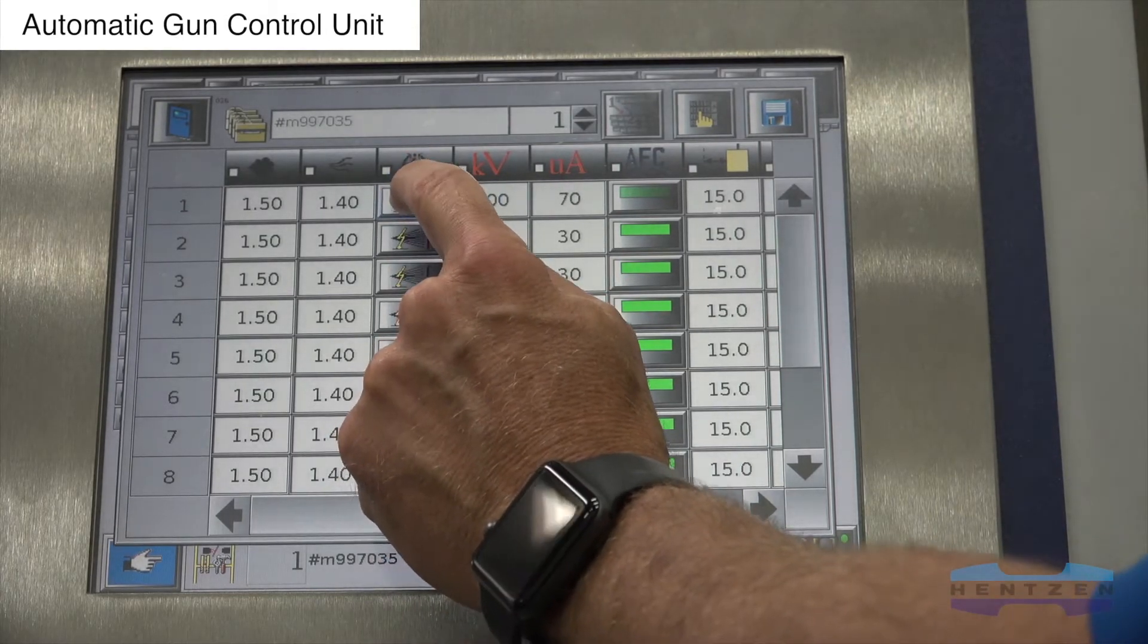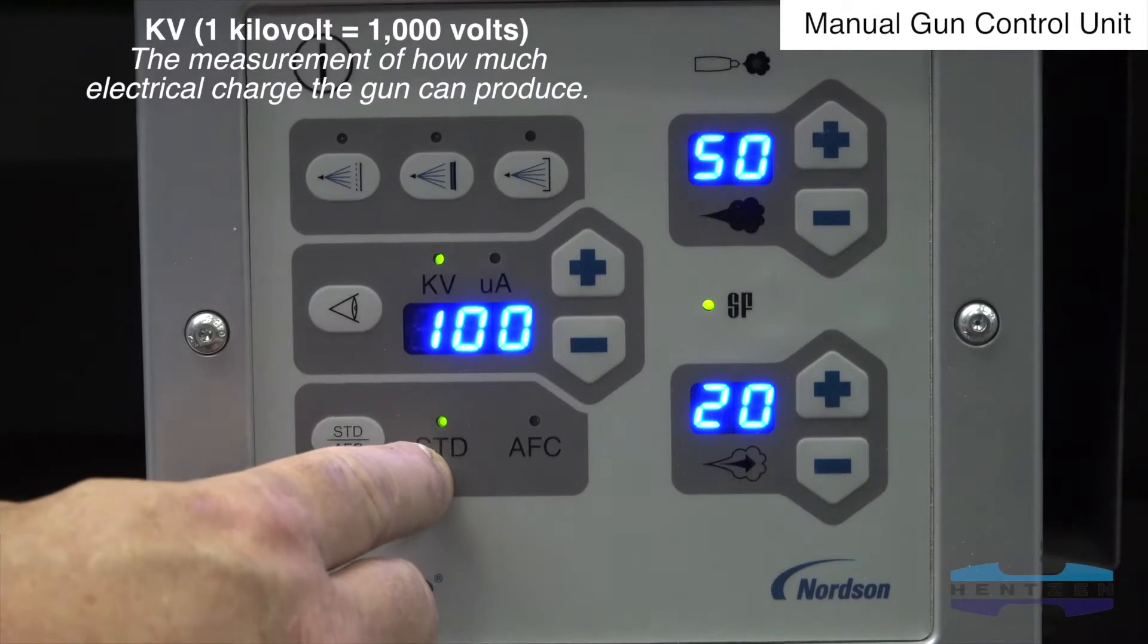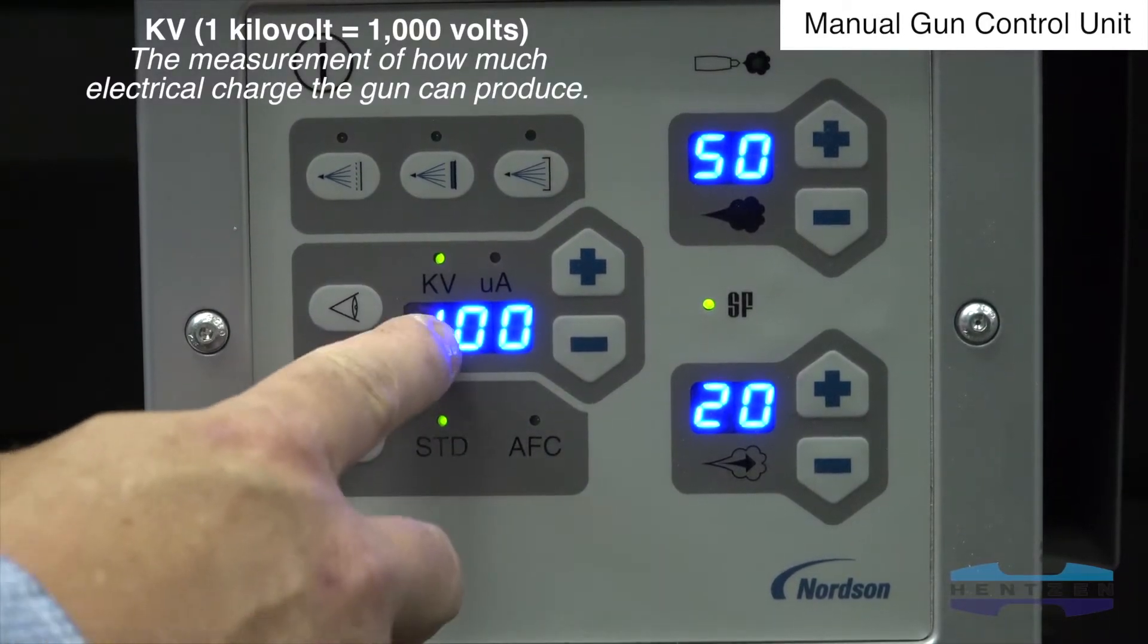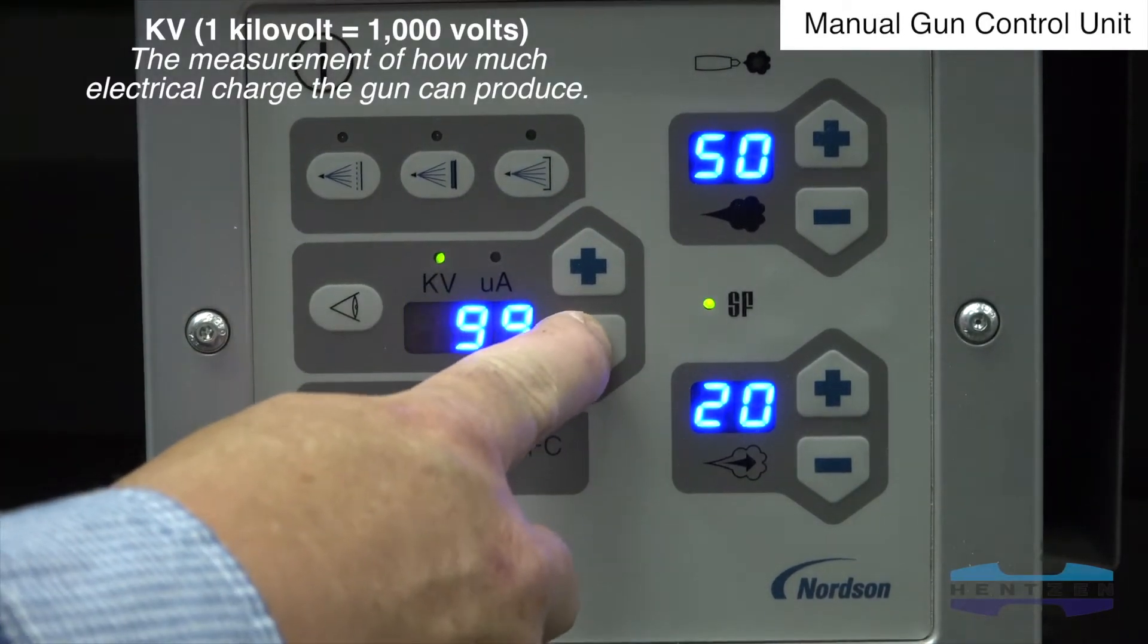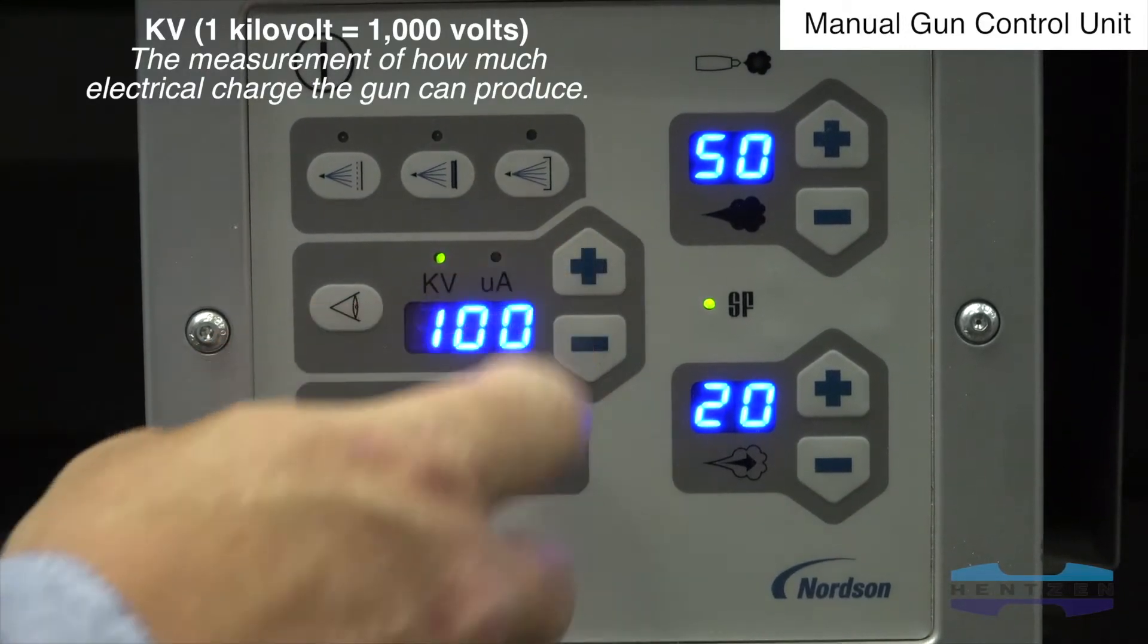Gun settings allow you the flexibility to control KV, where 1 kilovolt equals 1000 volts, the unit of measure indicating how much electrical charge the gun can produce.